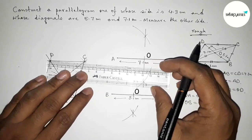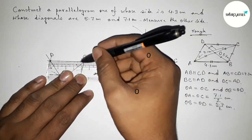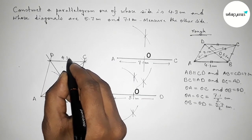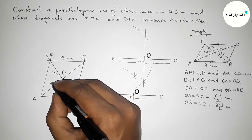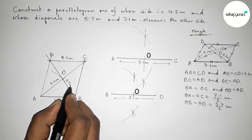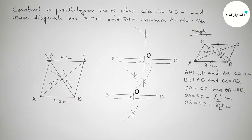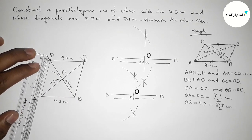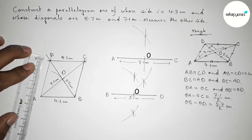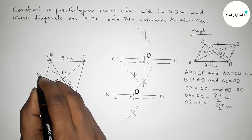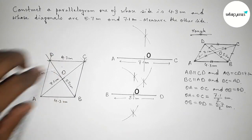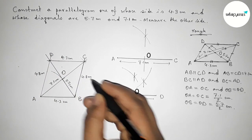Now checking the length CD, which should equal AB — checking this and it is 4.3 cm perfectly. The diagonal AC is 7.1 cm and the diagonal BD is 5.7 cm. Measuring side AD: 1, 2, 3, 4, 5, 6, 7, 8 — so this is approximately 4.8 cm. Side BC is also approximately 4.8 cm.